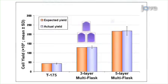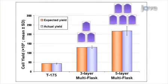Ultimately, three and five times the cell yield can be harvested compared to T175 flasks with homogeneous cell growth across all layers of the multi-flask.